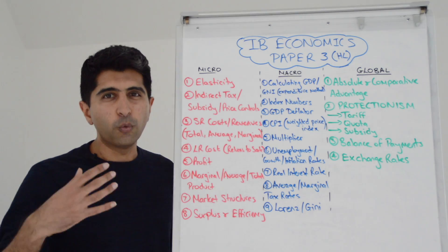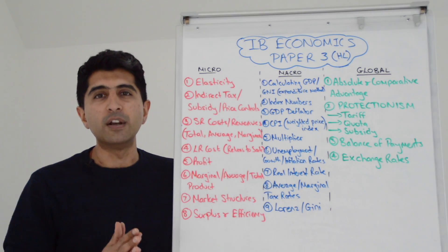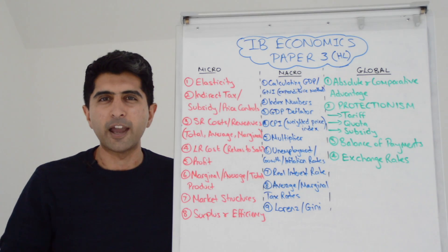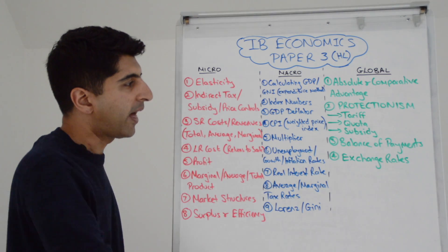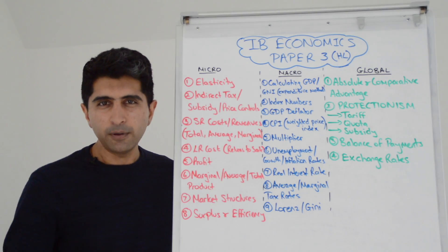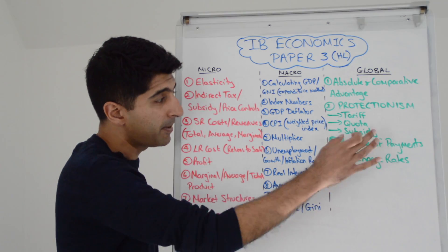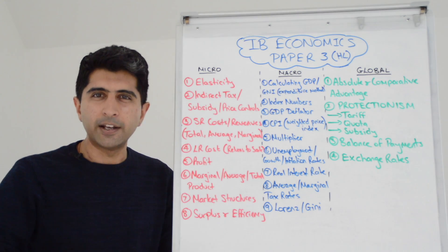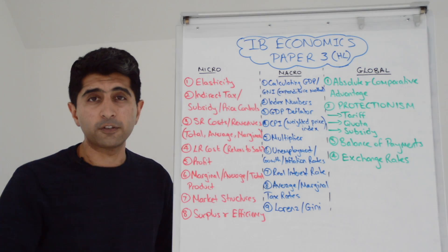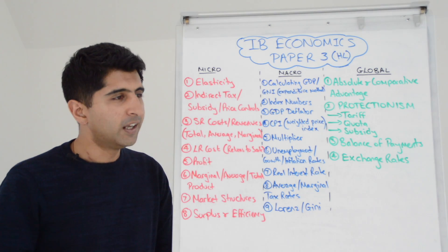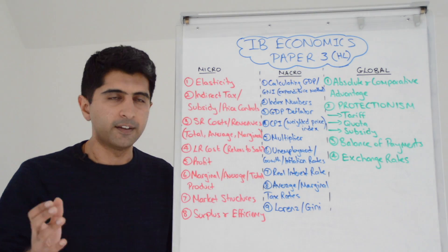When it comes to global, being able to work out absolute and comparative advantage from a table of data. Your big three protectionism diagrams — tariff, quota, subsidy — knowing those diagrams in serious detail, all the minute detail you can show. Balance of payments: constructing a table, breaking down the balance of payments into the current account, the financial account, etc. — and maybe having to calculate things in there if they give you some data and not others. And exchange rates: if exchange rates have changed, you might need to work out differences in costs for firms, being able to work nicely with exchange rates once they've appreciated or depreciated.